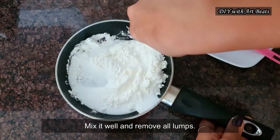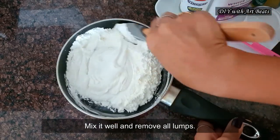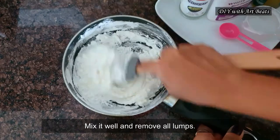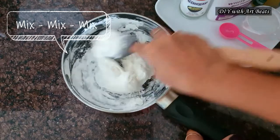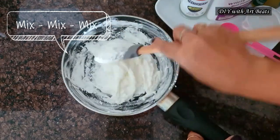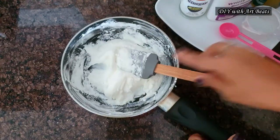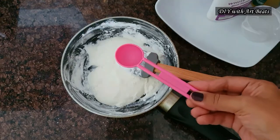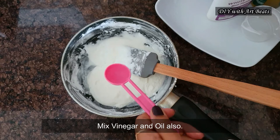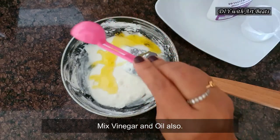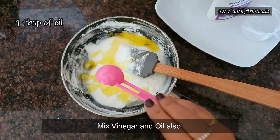Now start mixing it and remove all the lumps. Now I am adding vinegar in this mixture. It acts as a preservative for the clay and prevents the clay from getting molds or fungi. And oil helps in keeping the clay soft for a long time.